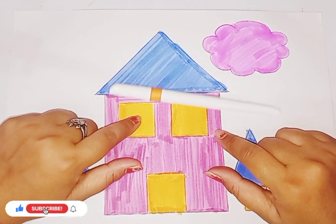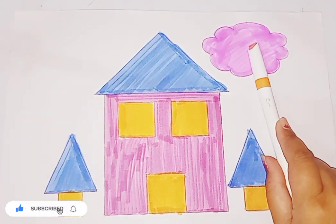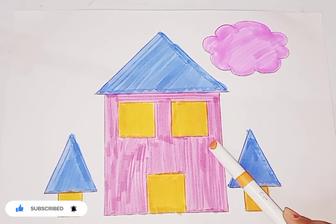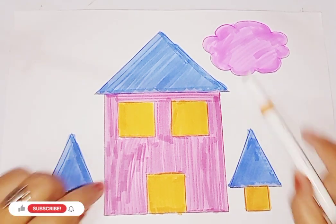So kids, today we learned shape house. Let's revise: cloud shape, triangle shape, square, rectangle, triangle, square.